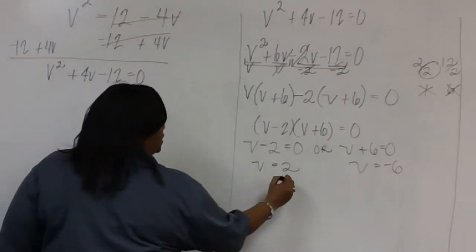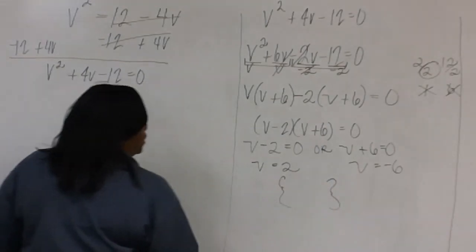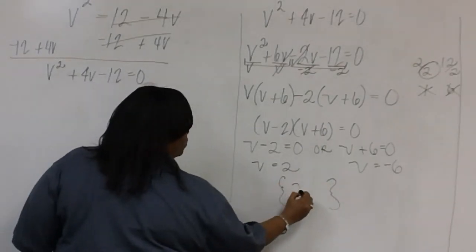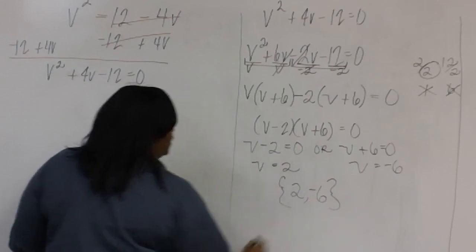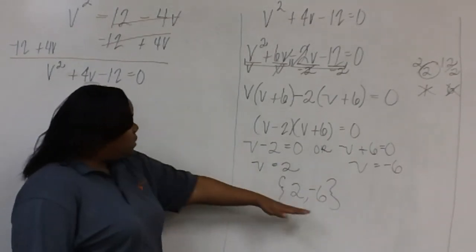So the solution set with braces consists of 2 and negative 6. This is the solution.